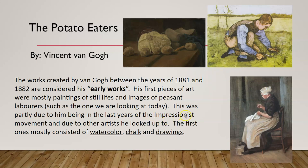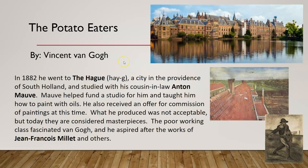In 1882, his second year, he went to The Hague — a city in the province of South Holland — and studied with his cousin-in-law Anton Mauve. Mauve helped fund a studio for him and taught him how to paint with oils, so this is where he really learned how to use them. He also received an offer for commission of paintings at this time, but what he produced was not acceptable to them. However, today the things he painted for that commission are considered masterpieces — he just never got any money from it.